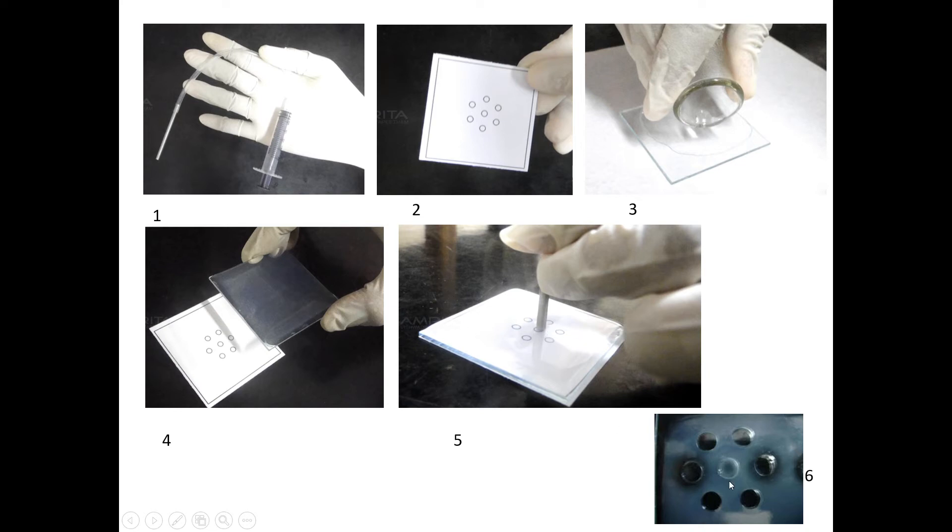With the help of gentle suction to avoid deforming the wells, you need to slowly remove the agarose which you have punched. The agarose plug should come out when you remove the gel puncher from the gel.